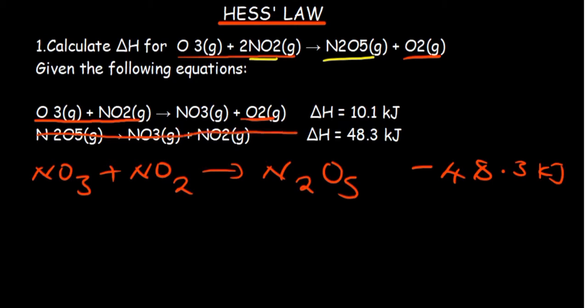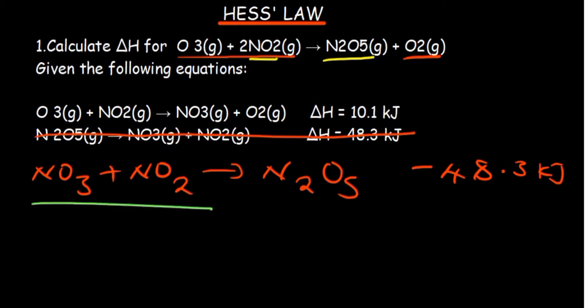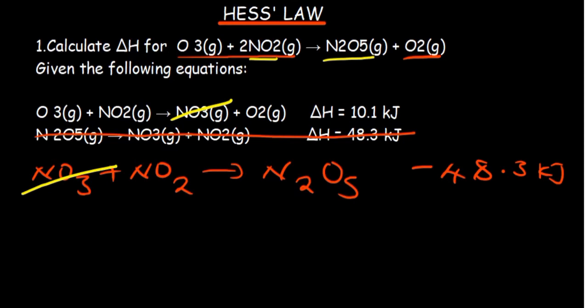Now I can remove the original second reaction since we reversed it. We compare what we have: whatever appears on opposite sides of the two equations is supposed to cancel out. Checking for common terms on both sides, I can see something that is common, so I cancel it out. This is a good thing because it is not part of our overall equation. Checking the other side — nothing else is common there.